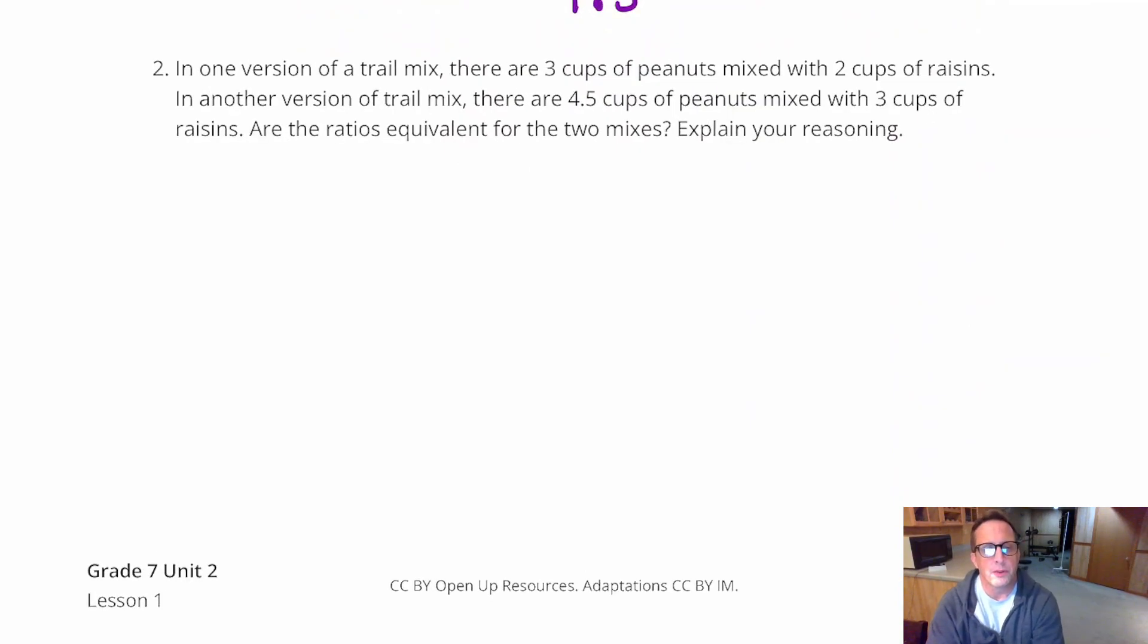Alright, for number two, it says, in one version of a trail mix, there are three cups of peanuts mixed with two cups of raisins. In another version of a trail mix, there's four and a half cups of peanuts mixed with three cups of raisins. Are the ratios equivalent for the two mixes? Explain the reasoning.